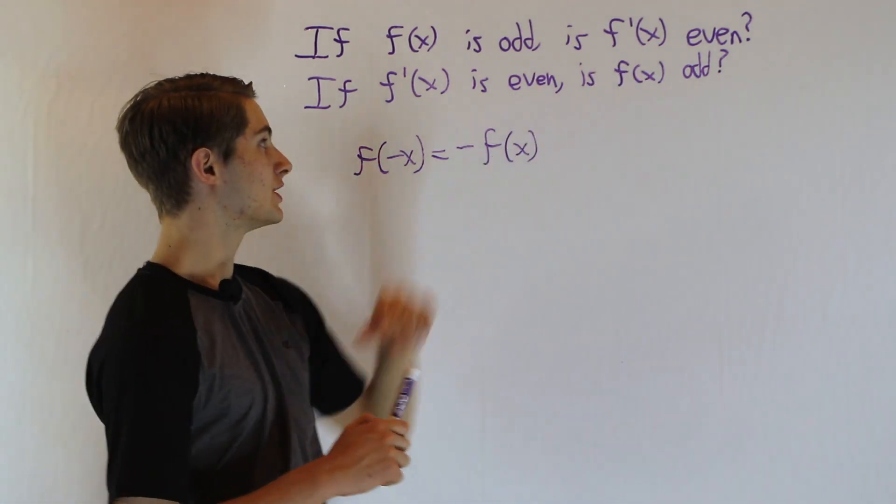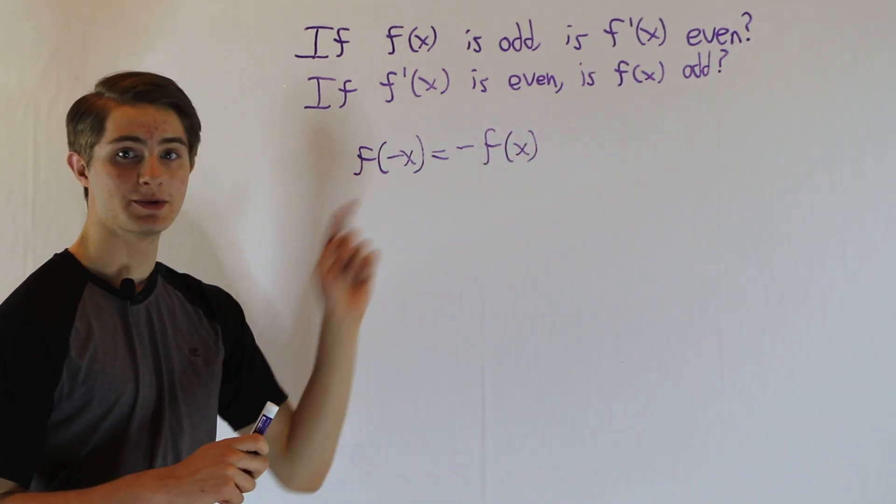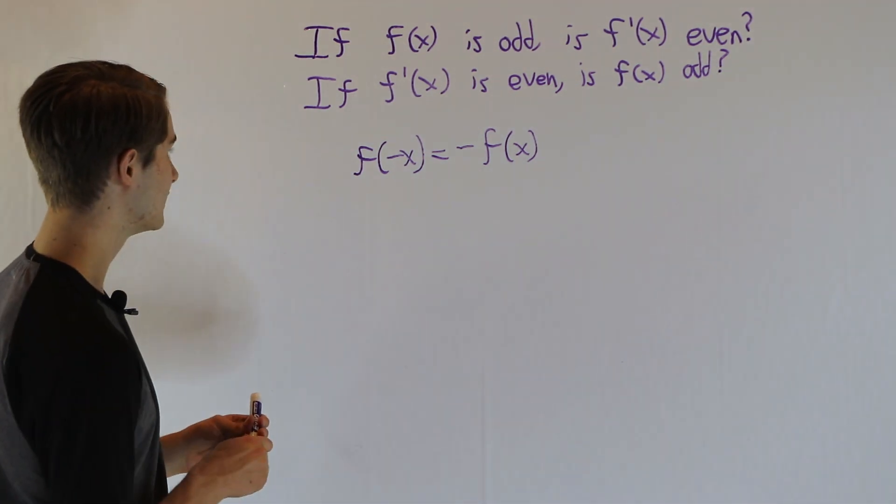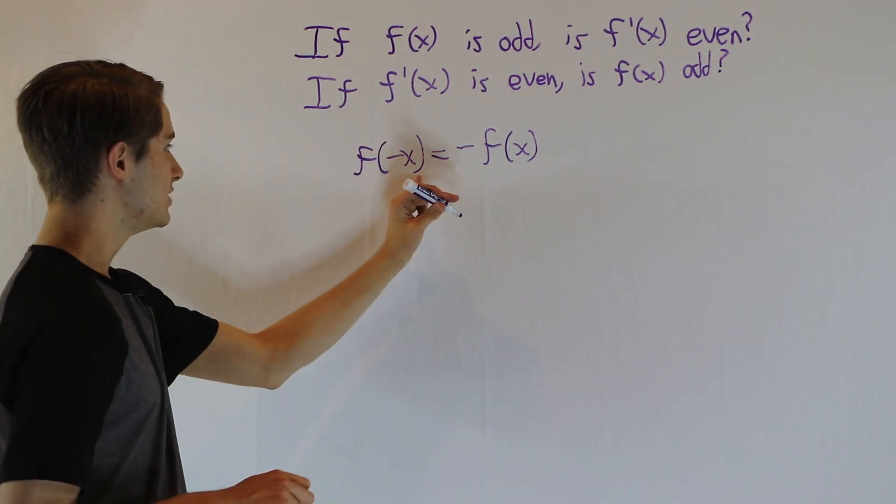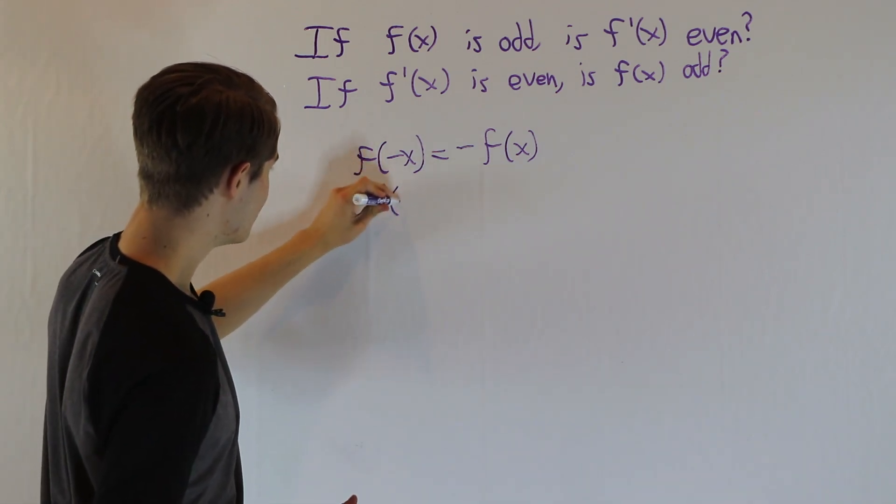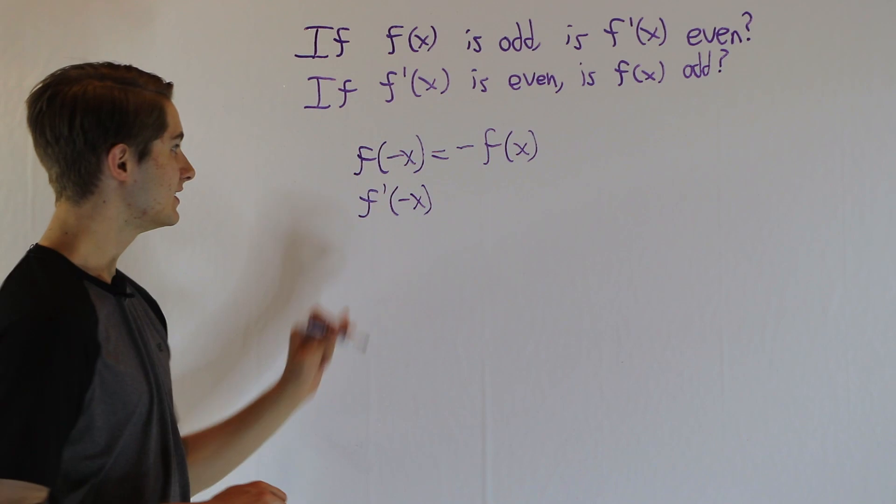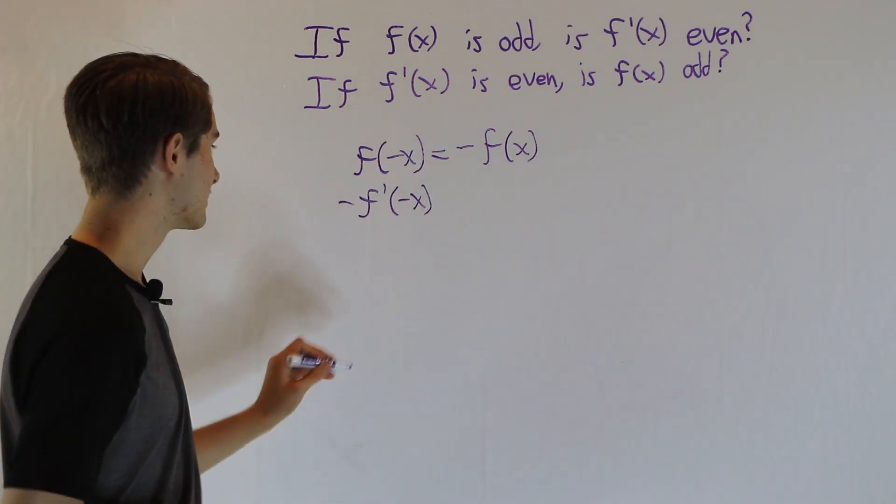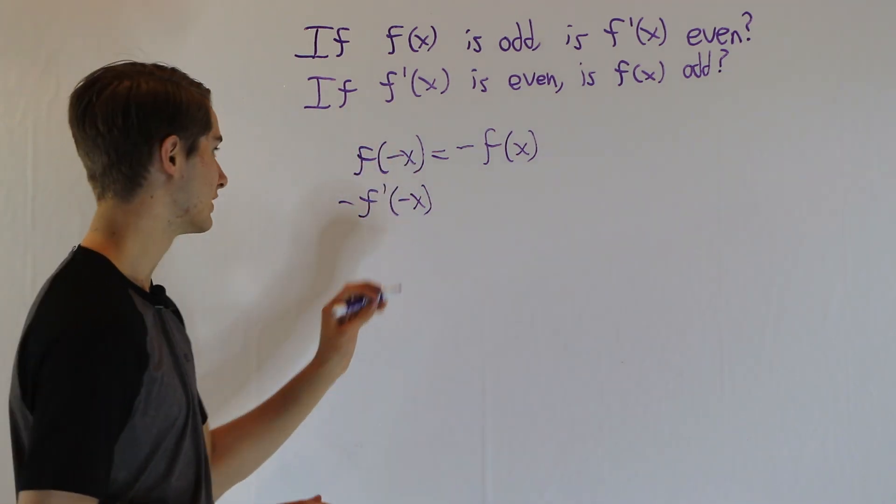If we want to see whether f prime of x is even, let's see what happens if we take the derivative on both sides. So if we differentiate f of negative x by the chain rule, first we'll have f prime of negative x, but then the derivative of the inside, the derivative of negative x, will be negative 1. So we just multiply by a negative 1 out here.